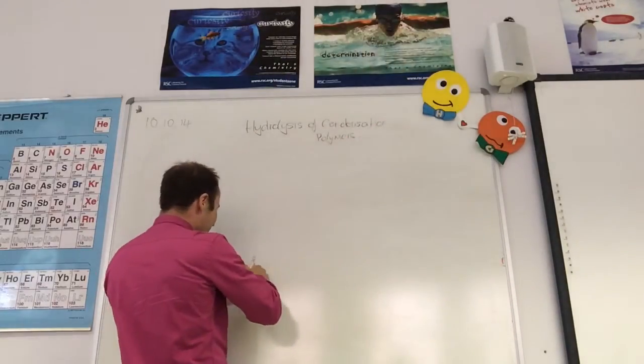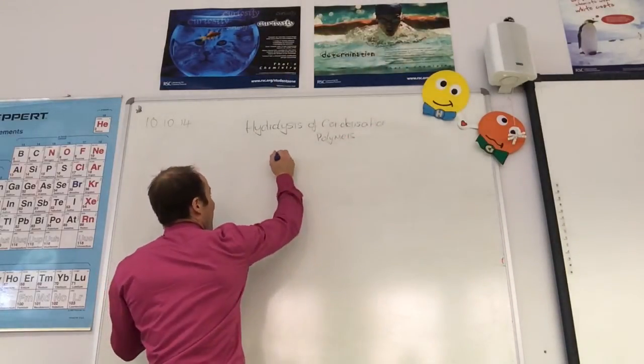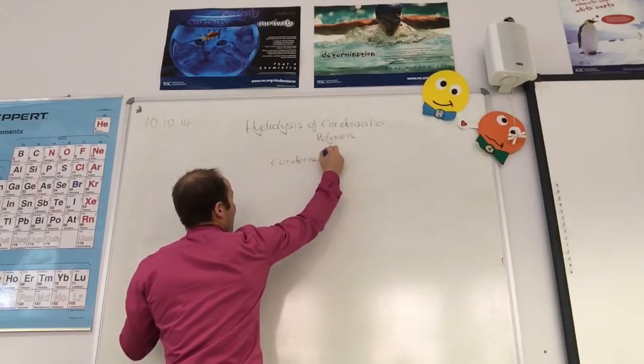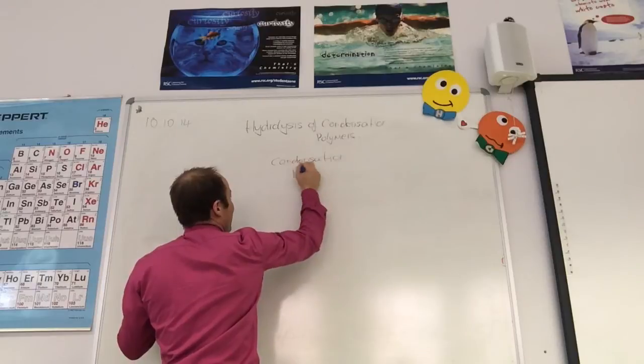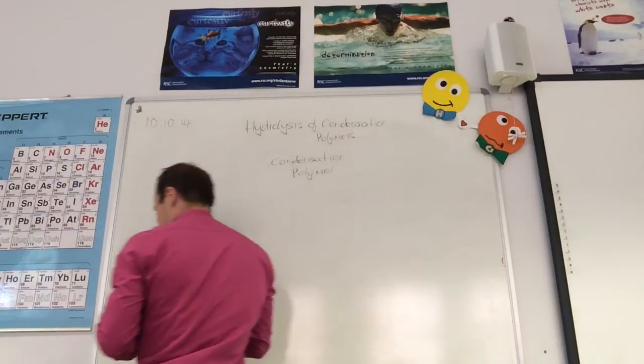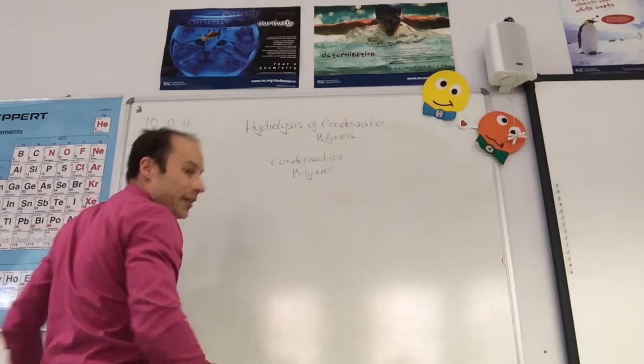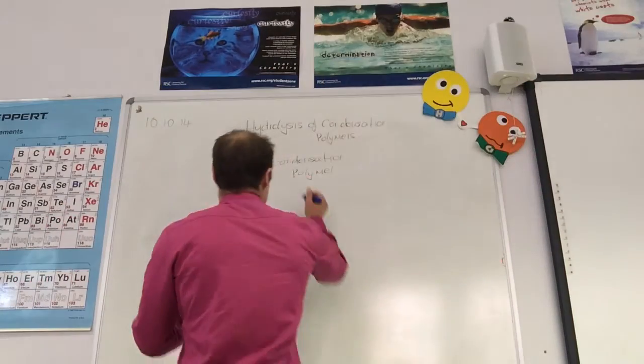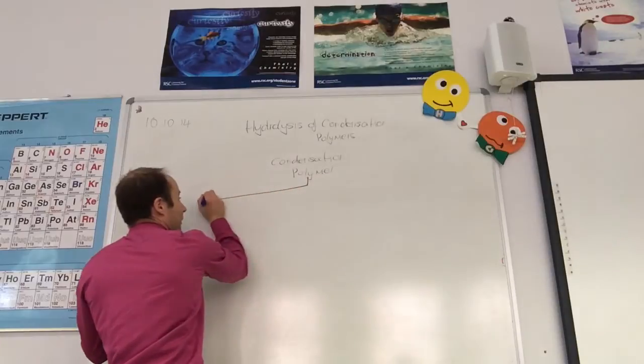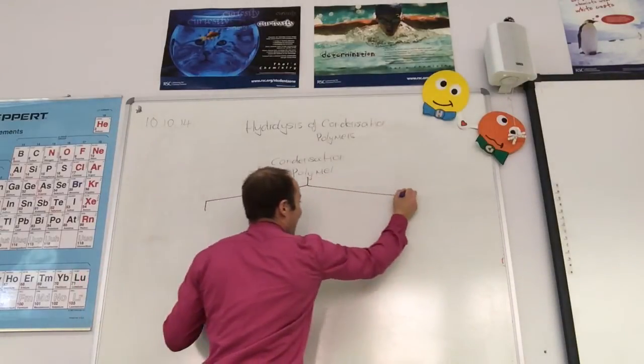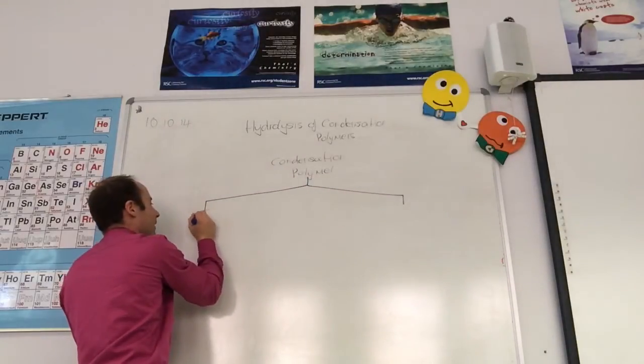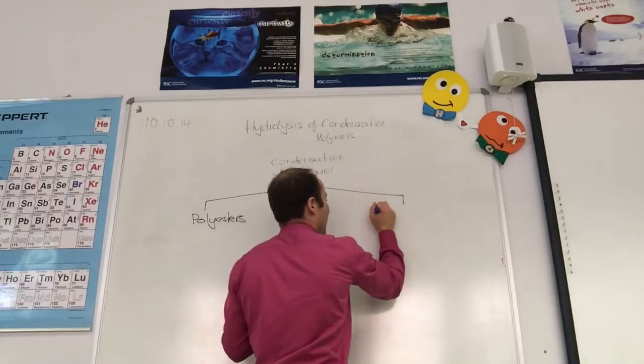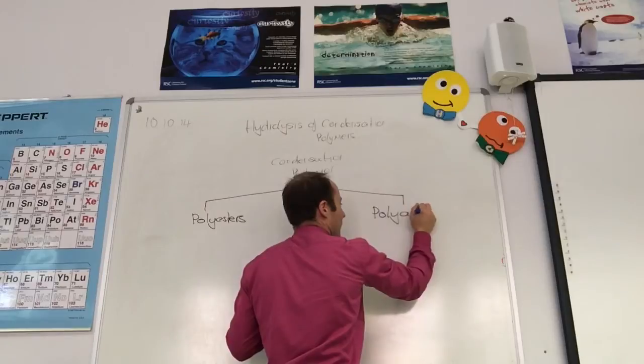We're going to start off with our condensation polymer. And there are two types of condensation polymer. They are polyamides and polyesters. So we're going to separate out into polyesters and polyamides.